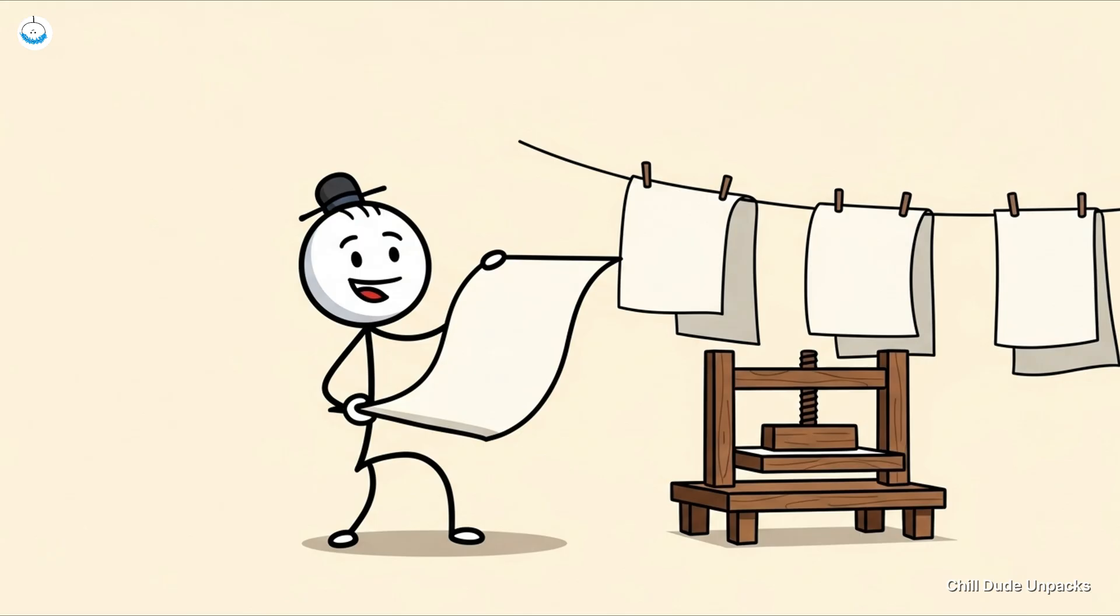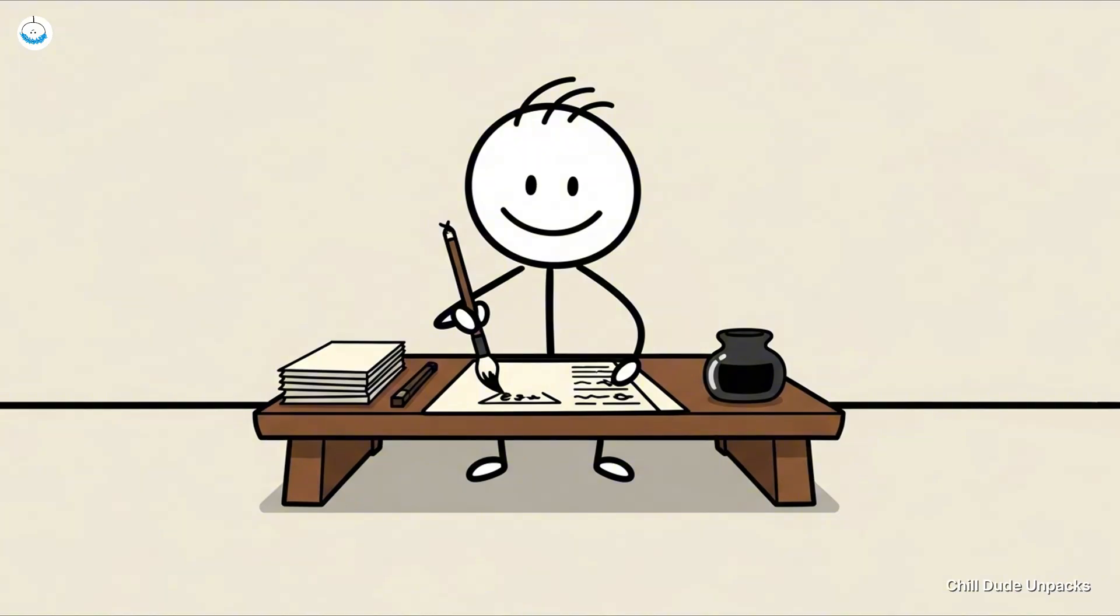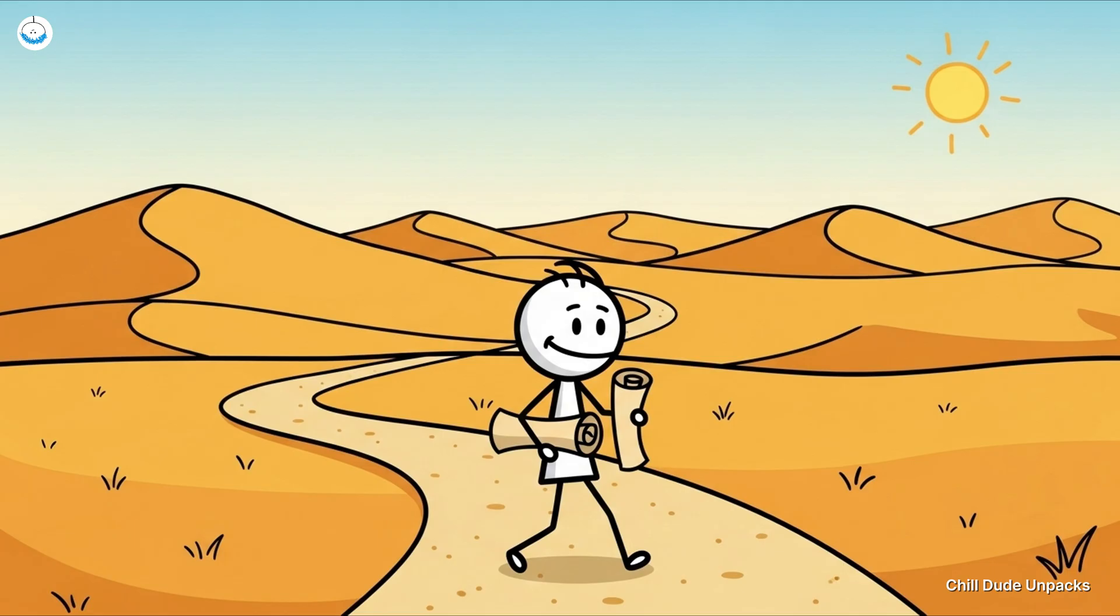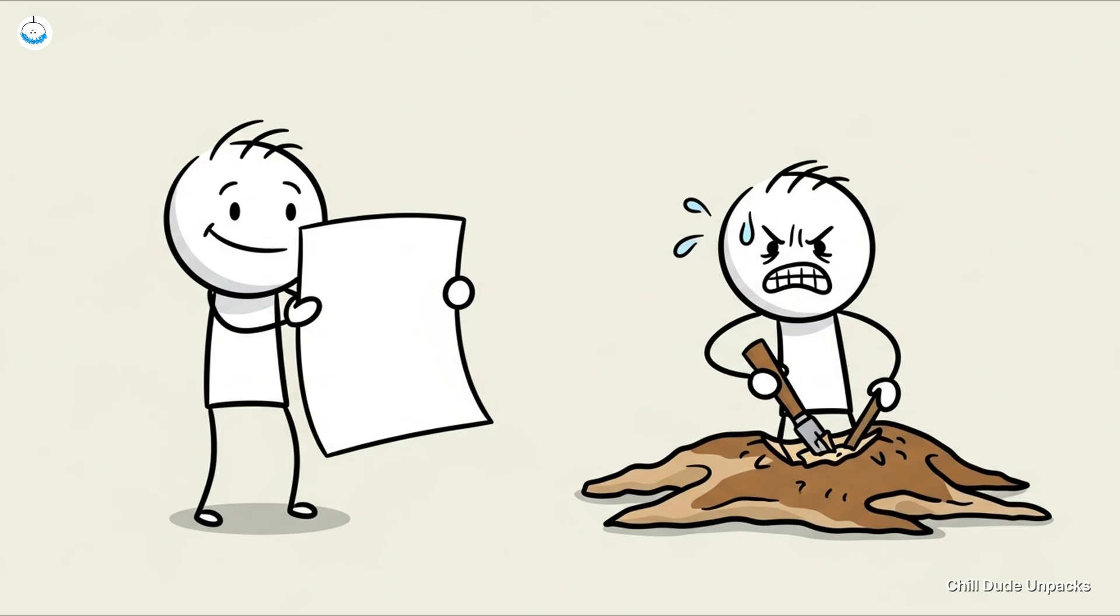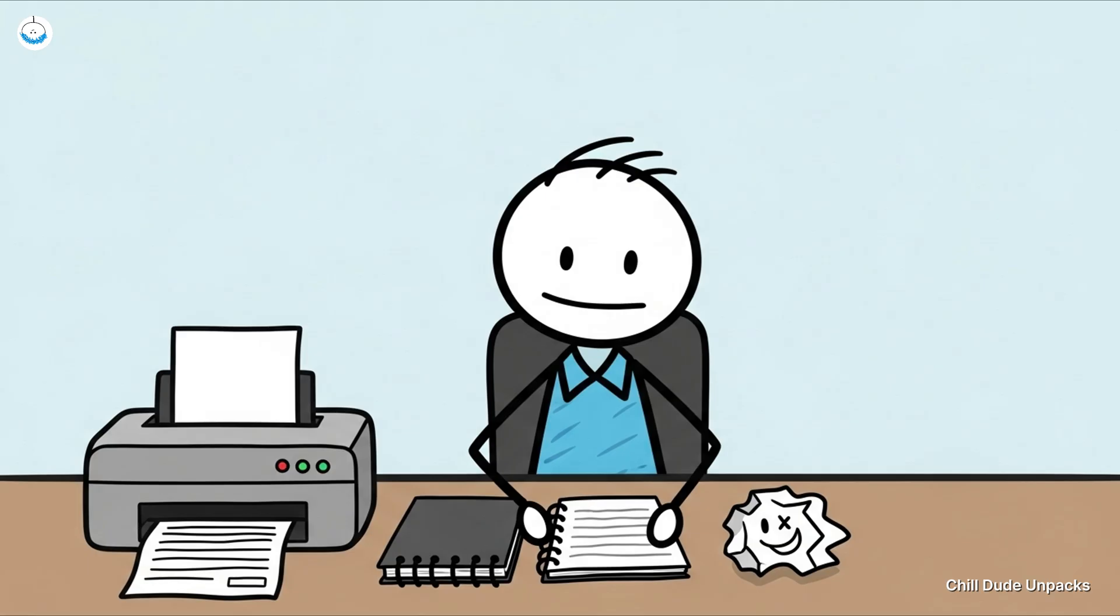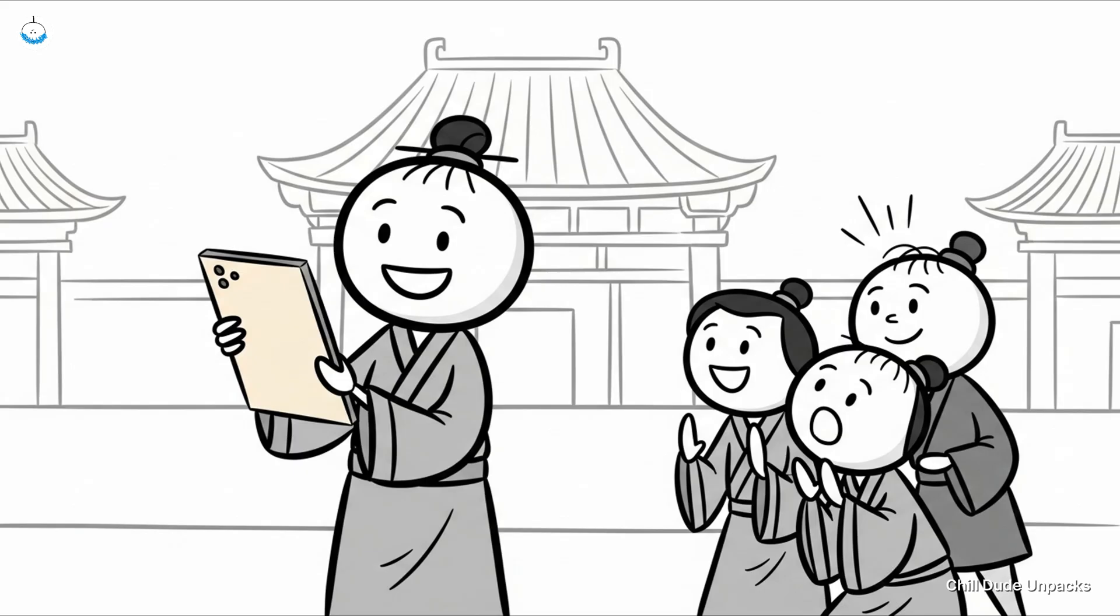Paper changed everything. Suddenly, you could write novels, grocery lists, and passive-aggressive roommate notes without needing a team of stone cutters. The technology spread along the Silk Road and eventually the whole world went, 'Oh yeah, this is way better than carving into a goat skin.' Today, your printer paper, notebooks, and even that napkin you just doodled on trace their DNA back to ancient paper making. It's the original content platform, the TikTok of the Han Dynasty, minus the dancing teens.